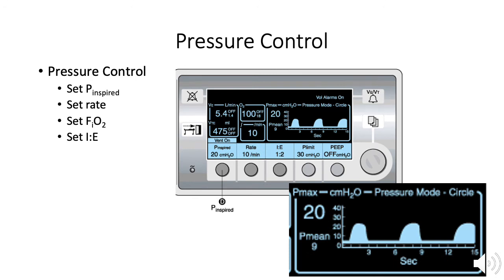Now let's look more closely at the pressure control panel settings. Inspiratory pressure is set at 20 centimeters of water. Tidal volume depends on compliance and is equal to the area under the curve. The waveform has a square shape. Notice that exhaled tidal volume is measured and listed as V-T-E, reported to equal 475 milliliters. The rate is 10 breaths per minute, or one breath every six seconds. The I-to-E ratio is one-to-two; thus two seconds are spent in inspiration and four seconds in expiration. Note the set parameters in blue boxes and the measured parameters in the black boxes above.